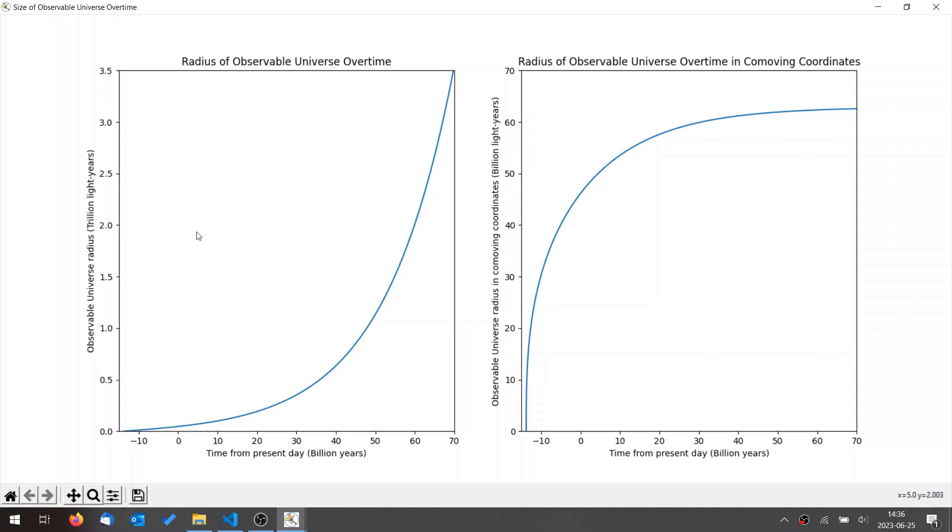But only because the observable universe is bigger, doesn't mean that we actually see any more. Because all the galaxies themselves are now much more spread out. So even if it's a bigger volume that we're looking at, if everything's a lot more spread out, it doesn't mean we're seeing more.